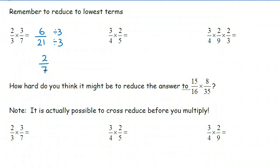So try the next couple questions on your own. Three-fourths times two-fifths, we multiply the numerators together and get six, multiply the denominators together and get twenty.